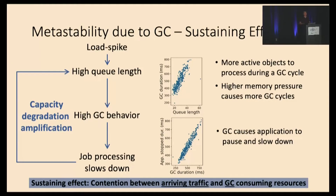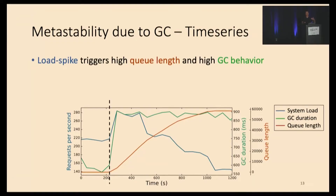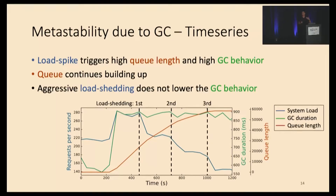Let's put all of this together and see how it happens over time. Initially, your system is running well — garbage collection is low and QLens is low. A load spike triggers high QLens and high GC behavior, and the queue continues to build up. Even after we did aggressive load shedding by reducing the load by 30%, the GC behavior stays high and the queue continues to build up.